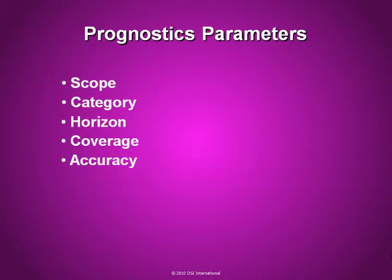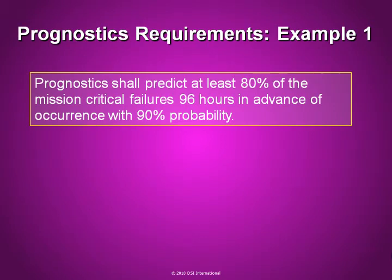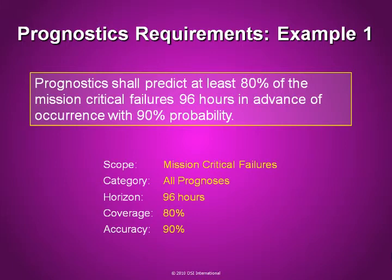We will now take a look at a few typical system prognostic requirements — these are requirements from actual projects, though the numbers have been changed to protect the proprietary nature of these projects. The first requirement reads: Prognostics shall predict at least 80% of the mission-critical failures 96 hours in advance of occurrence with 90% probability. Breaking this down: the scope is all mission-critical failures, the category is all prognoses, the horizon is 96 hours prior to failure, the coverage is 80% of the mission-critical failures, and the accuracy is 90%.